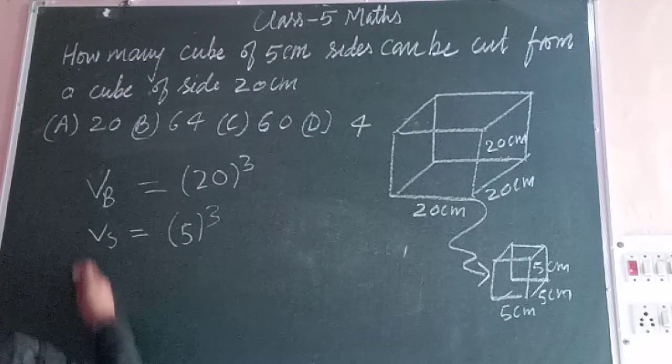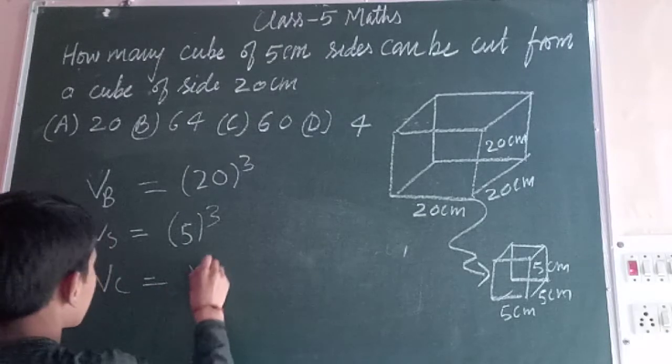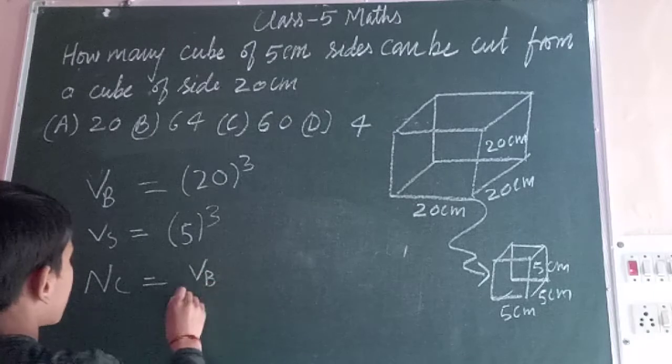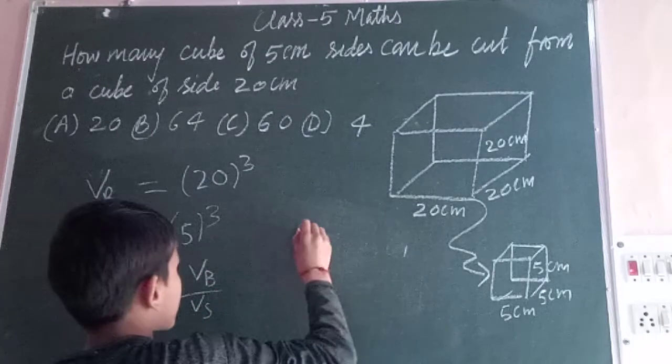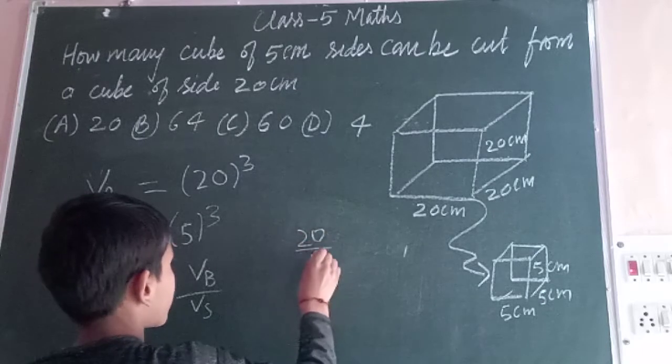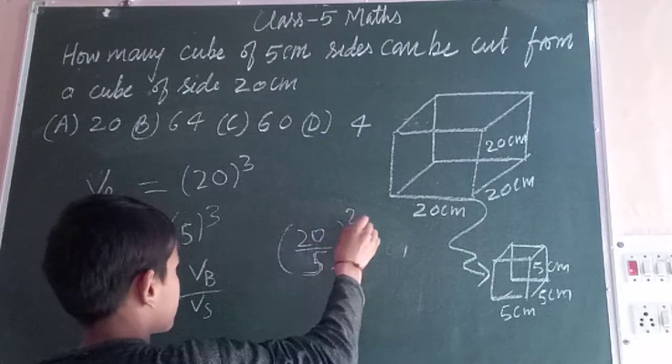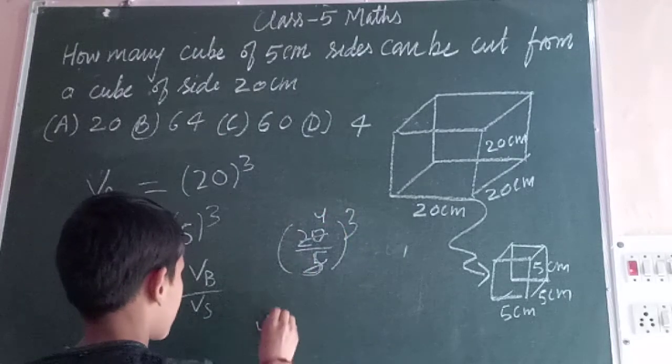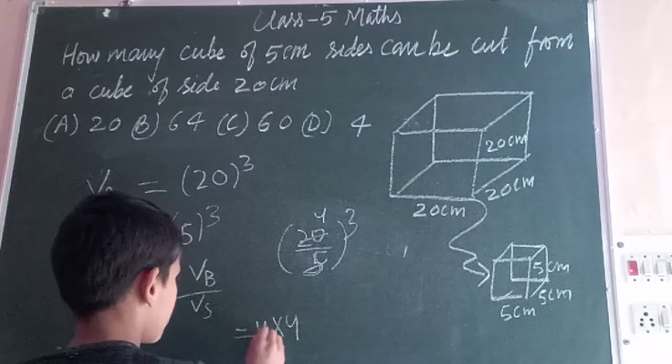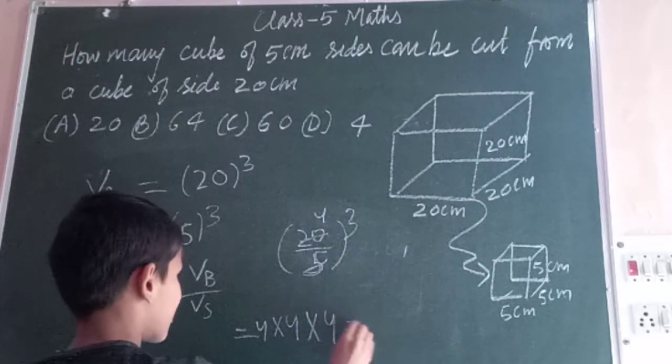The number of cubes equals VB upon VS, which equals 20 upon 5, whole cubed. This gives us 4 cubed, which is 4 times 4 times 4, equals 64.